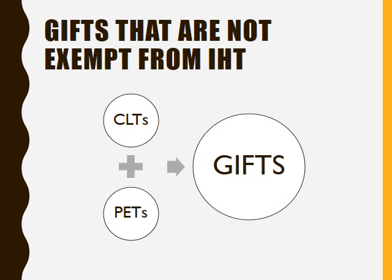We've now looked at some types of gifts that are exempt from inheritance tax, and how we would value certain types of assets that are gifted or transferred at less than their value. That leaves an individual with some types of gifts that do have to be taken into account when calculating inheritance tax. Of these, we have two main types: CLTs, which stands for chargeable lifetime transfers, and PETs, which stands for potentially exempt transfers. We'll be looking at these in a later session.